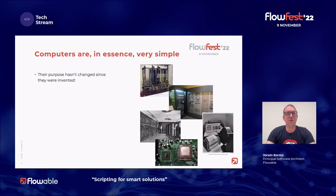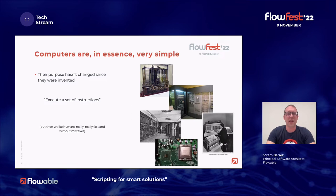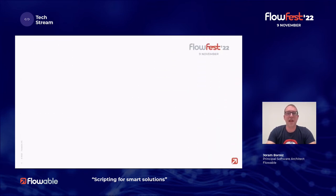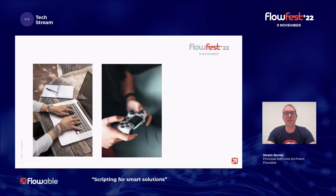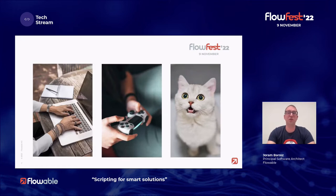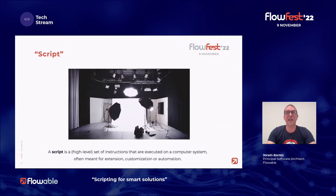So computers — that's where we start. Since they were created, invented, they are very simple things in reality. They take a set of instructions and execute them very, very fast and without errors like we humans tend to do. They have evolved fantastically; however, their main purpose is still the same. Whether you are filling in your Excel sheets, playing a video game, or watching cat videos, the computer is executing a set of instructions. This is where the script part comes in — a script is a high-level set of instructions executed on a computer system, often meant for extension, customization, or automation. The word script comes from the movie industry, where the script defines which actor says what and how the set needs to look.